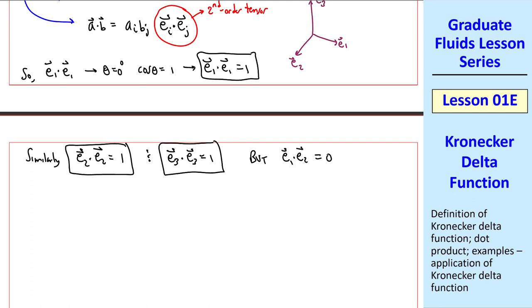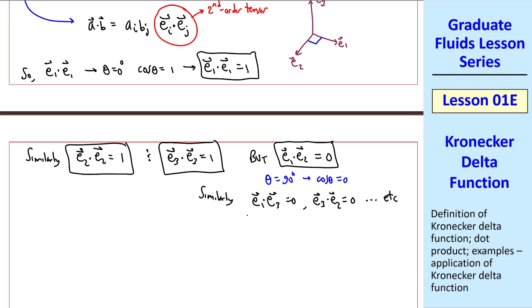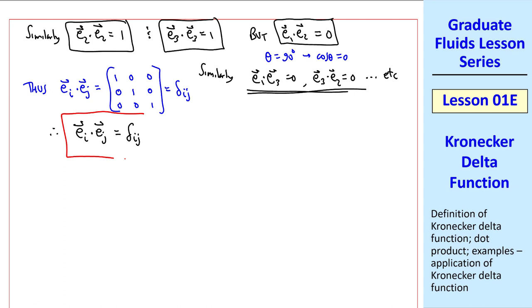If we choose some Cartesian axes, we have e1, e2, and e3. These are unit vectors, so their magnitude is 1. And they're all 90 degrees apart from each other. If we take e1 dotted with itself, theta is 0 degrees, and cosine of theta is therefore 1. So e1 dot e1 is 1. Similarly, e2 dotted with itself is 1, and e3 dotted with itself is 1. But e1 dot e2 is 0. These two unit vectors are 90 degrees apart, and cosine theta is 0. So ei dot ej is delta ij.